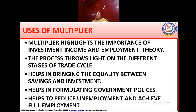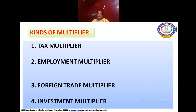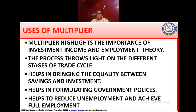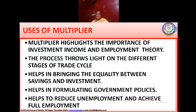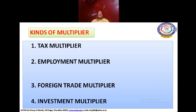Uses of Multiplier. The multiplier highlights the importance of investment in income and employment theory. The process throws light on the different stages of trade cycles. It helps in bringing equality between savings and investment, and in formulating government policies. It helps to reduce unemployment and achieve full employment. There are 4 kinds of multiplier: Number 1 — Tax multiplier; Number 2 — Employment multiplier; Number 3 — Foreign trade multiplier; Number 4 — Investment multiplier.